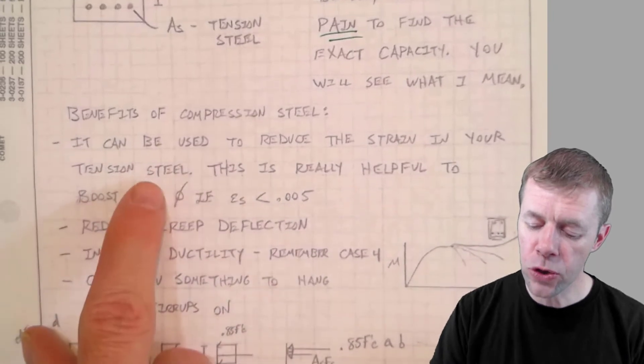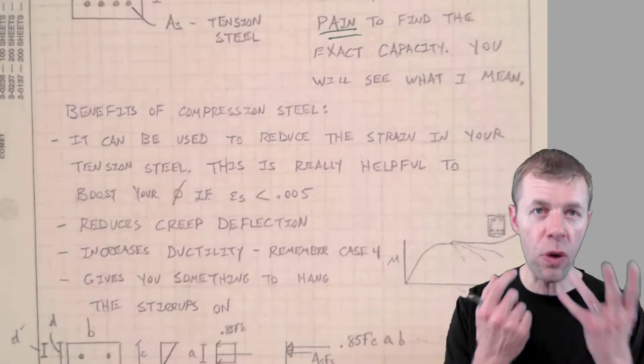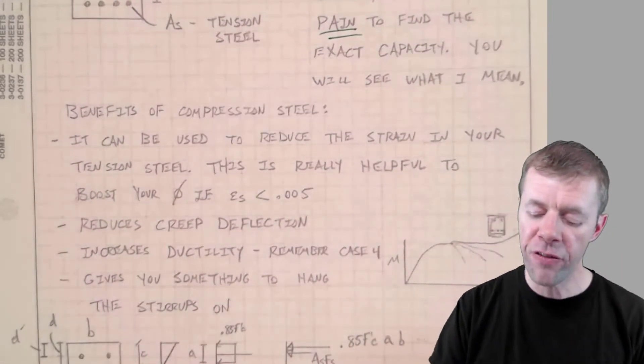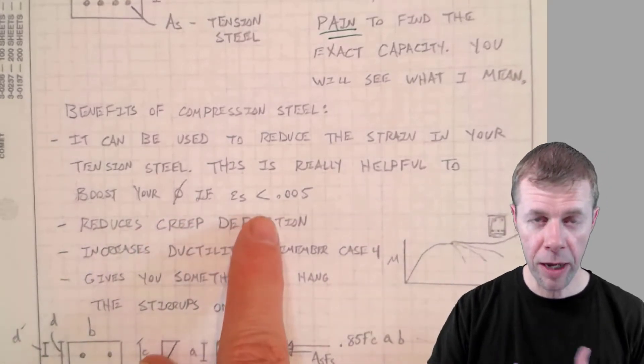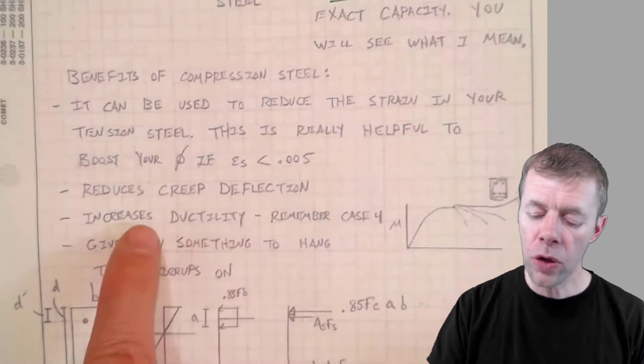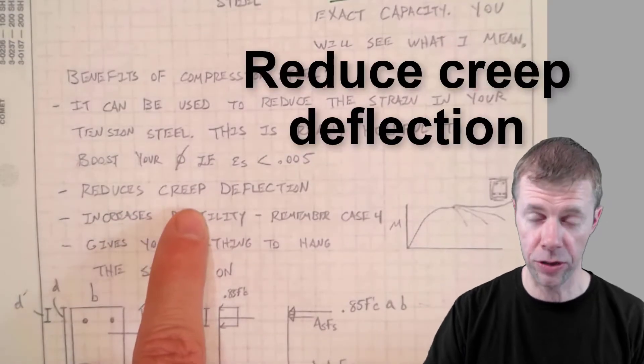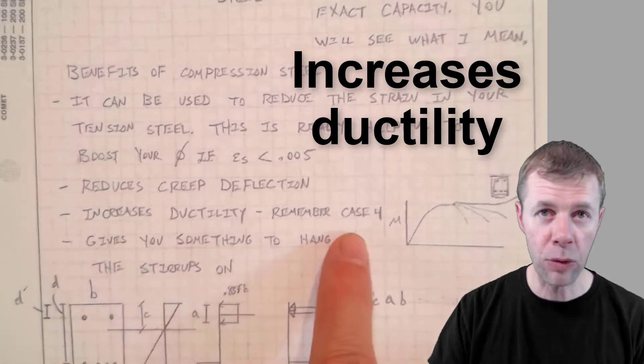It can be used to reduce the strain in your tension steel. If you ever have a fee problem, you can actually put in compression steel and that will reduce the amount of strain in your tension steel. It can also reduce your creep deflection. It also increases the ductility.